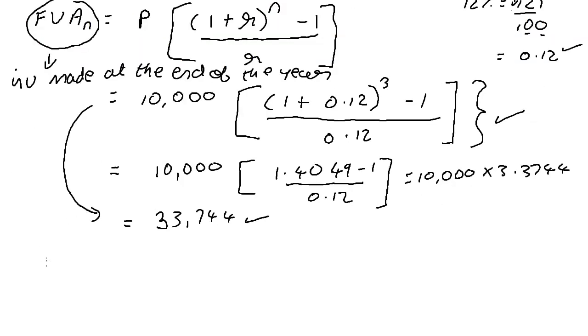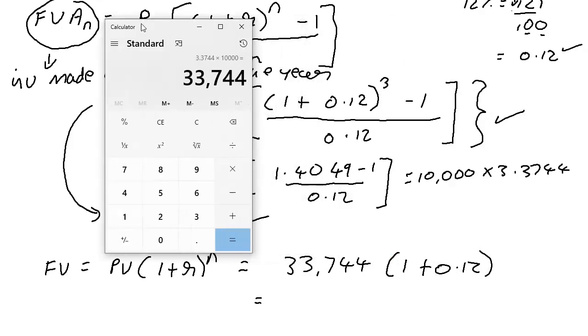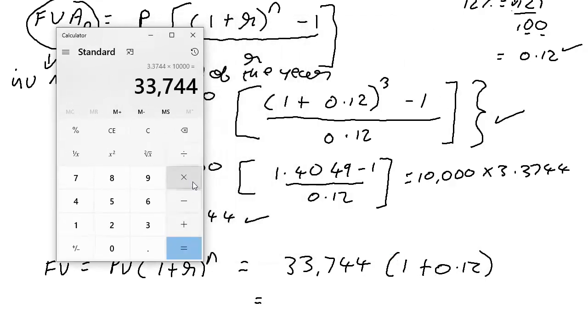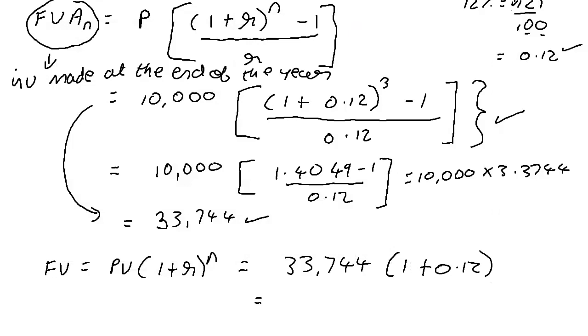We know the formula for future value is equal to present value open bracket (1 plus r) raised to the power of n, which is equal to 33,744 into 1 plus 0.12, or 1.12.